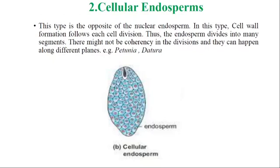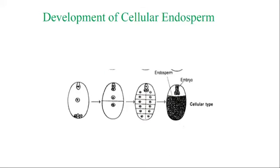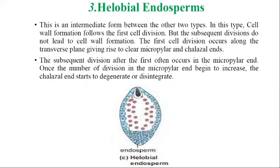In summary, cellular endosperm: cell wall formation follows each cell division, and the endosperm divides into many segments that can happen along different planes. In the figure we can see the cellular type of endosperm in which each division is followed by cell wall formation and segment formation — totally opposite to nuclear endosperm.